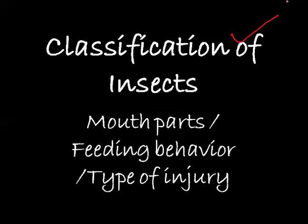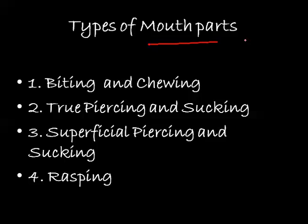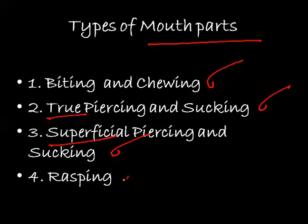Hello friends, welcome back. Today we'll discuss the injuries caused to plants by insects, and we will classify insects on the basis of injuries caused to plants — the ways of mouth parts, the feeding behavior, and the type of injury they are causing to the plant. Looking at the various injuries caused on the plant, we can classify insects into four types based on their mouth parts.